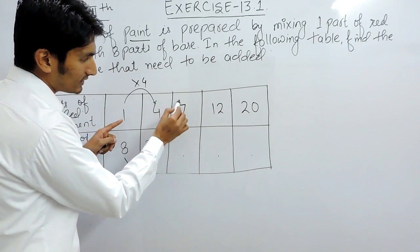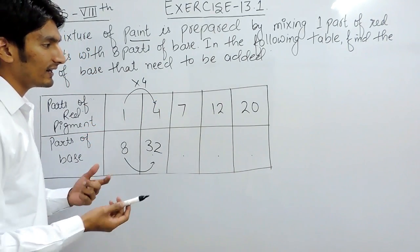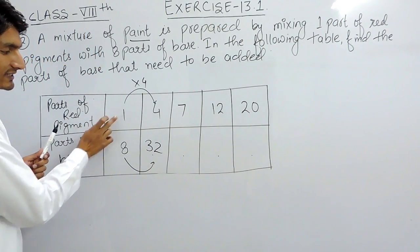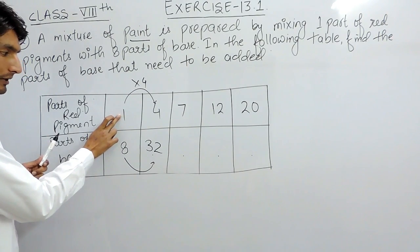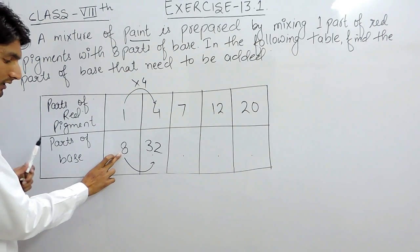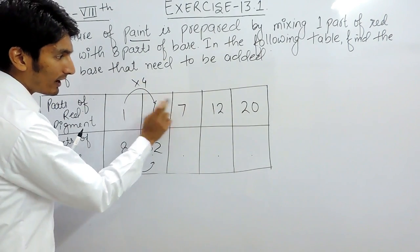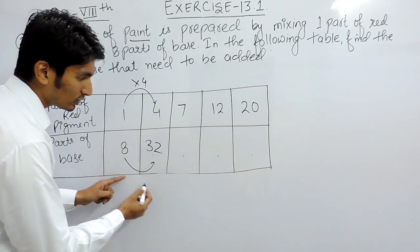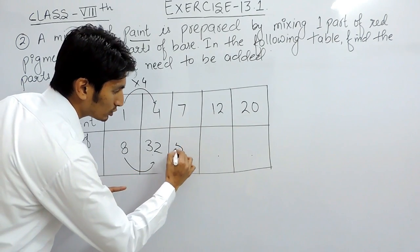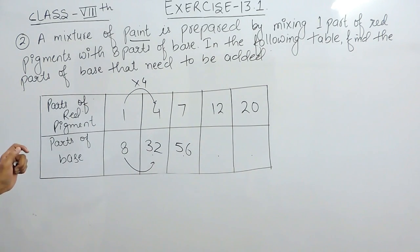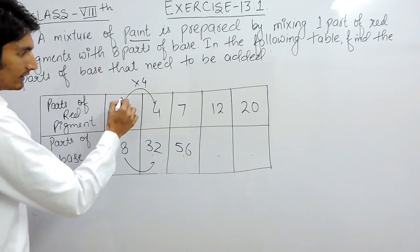Similarly, it is better to calculate from the starting value. Taking one part of red pigment as the base: if we have to add seven parts of red pigment, that means it is increased seven times, so the base also increases seven times. So if you are adding seven parts of red pigment, you have to add 56 parts of base.